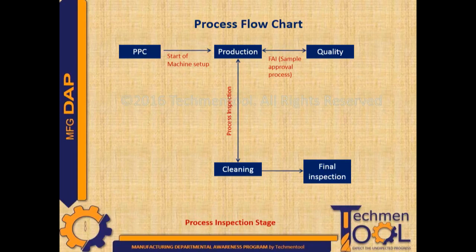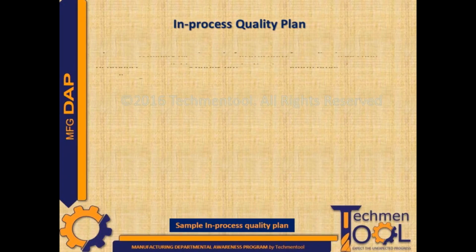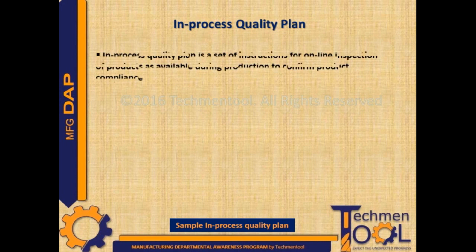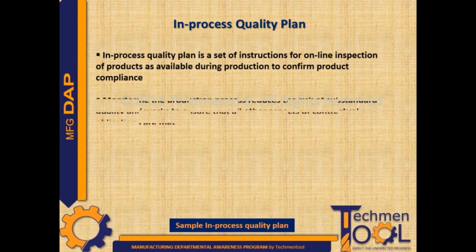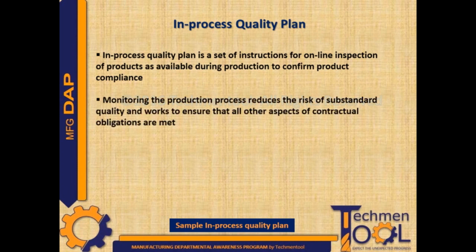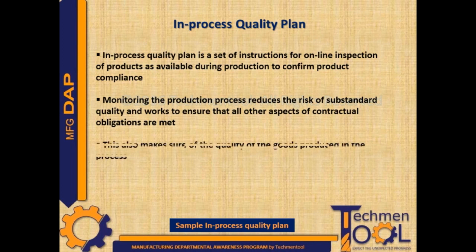Then produced parts move to further operations such as cleaning or final inspection. In-process quality plan is a set of instructions for online inspection of the products as available during production to confirm product compliance. Monitoring the production process reduces the risk of substandard quality and works to ensure that all aspects of contractual obligations are met.